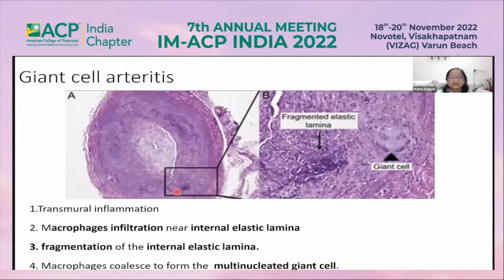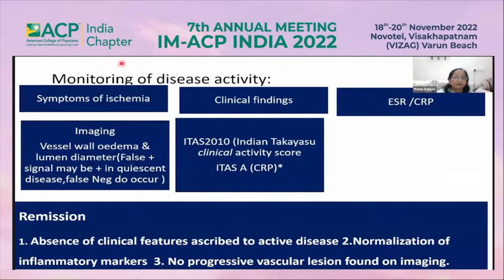The histopathological changes include transmural inflammation, fragmented internal elastic lamina, and giant cell infiltration coalescing to form giant cells. These are the findings in temporal artery biopsy in giant cell arteritis. We should monitor disease activity by symptoms of ischemia, clinical findings, and ESR/CRP imaging, including vessel wall edema and luminal diameter.